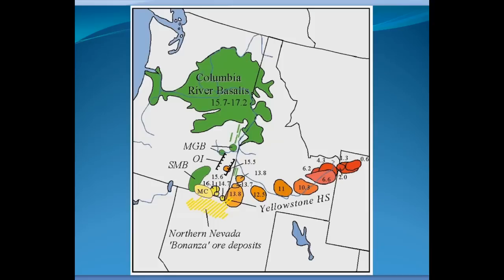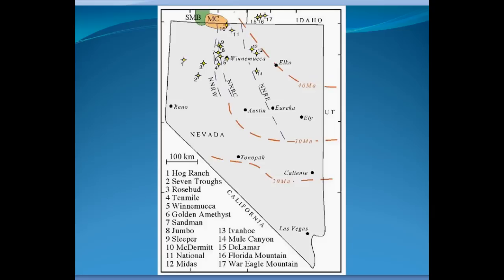The Yellowstone hot spot stayed stationary while the North American plate slid over it, and in northern Nevada that has formed some really rich gold deposits. These drawings show well-known gold areas that have been mined in the past or might be mined in the future, with dotted red lines at 20MA, 30MA, and 40MA — areas where subduction of the Pacific plates underneath the North American plate has led to volcanic action in Nevada and the resulting really rich gold deposits.